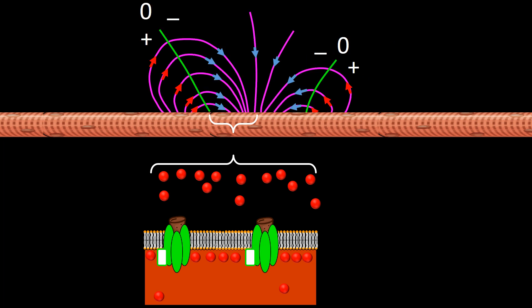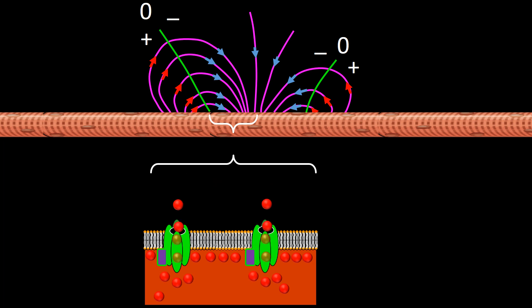Now let's see what goes on at the same segment of the membrane during the second element of the quadrupole — that is, while the segment is undergoing the ionic current of the leading dipole. During this event, the sodium channels have become activated, their passages open, and sodium ions are coming into the cell. The passage of sodium ions through the channels creates the ionic current.